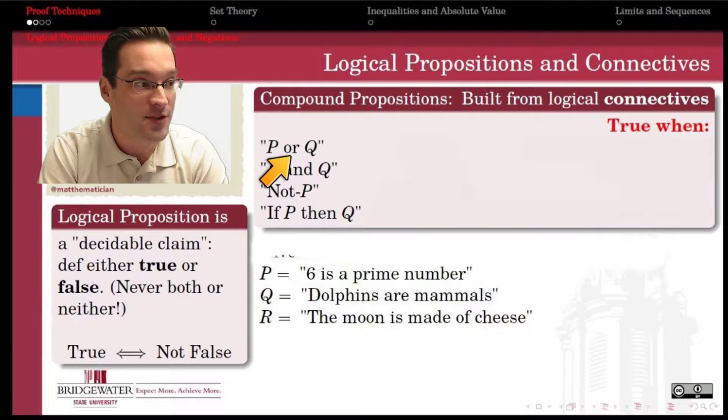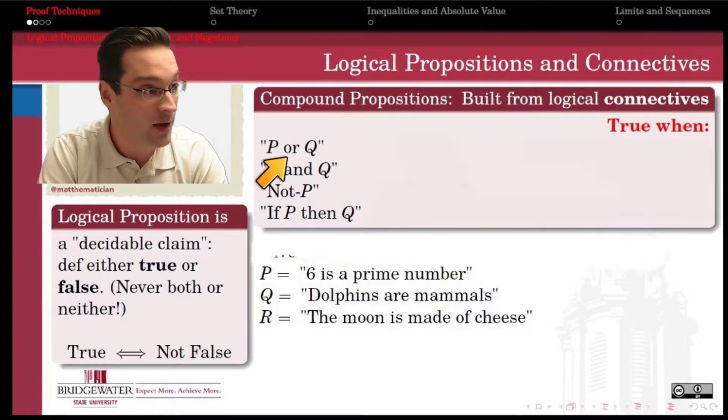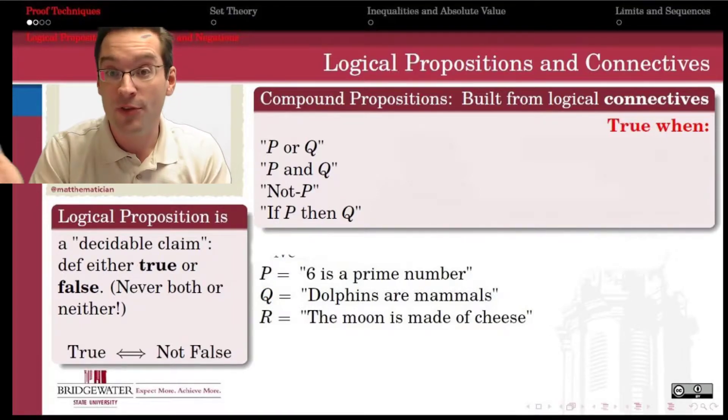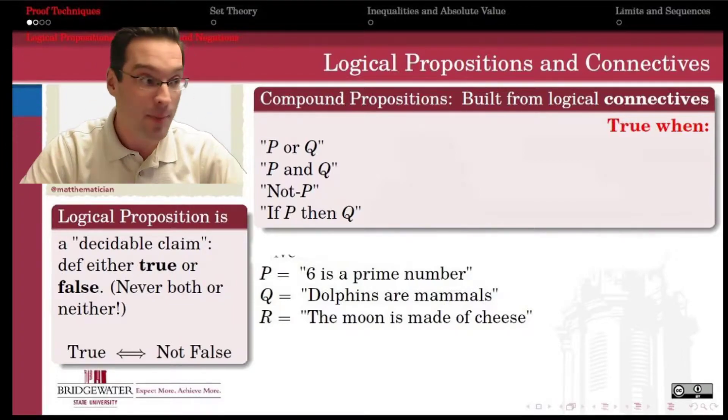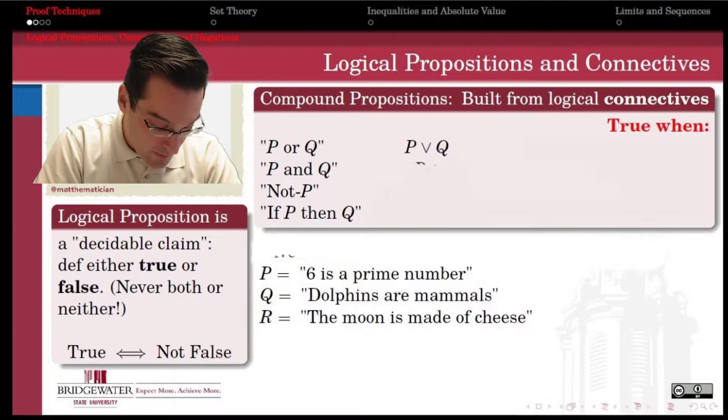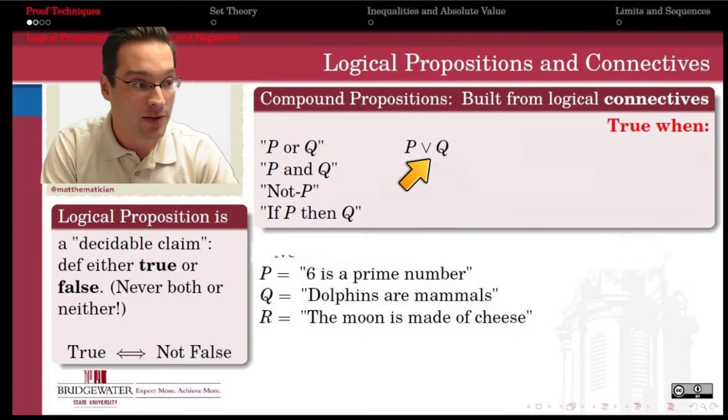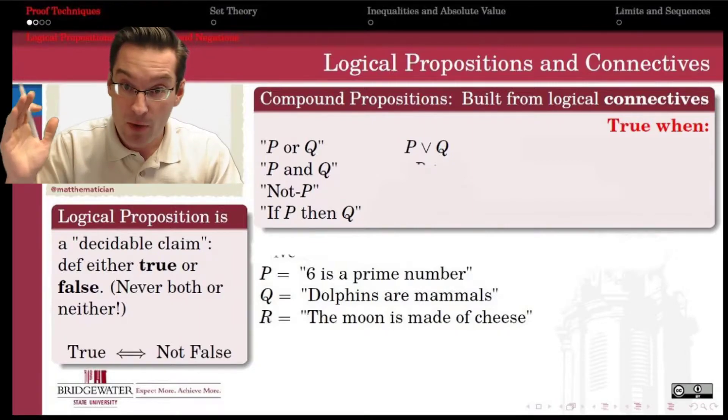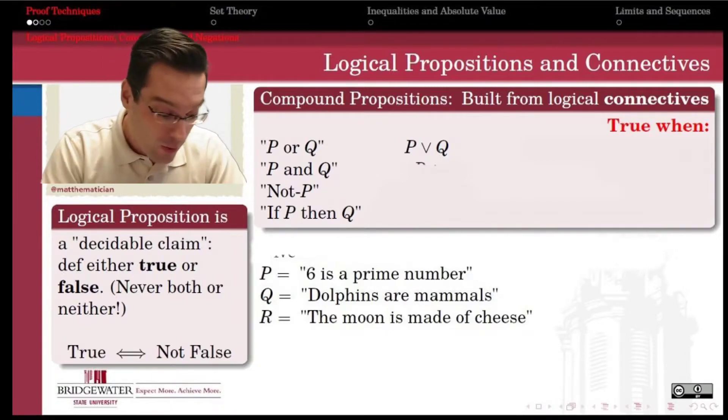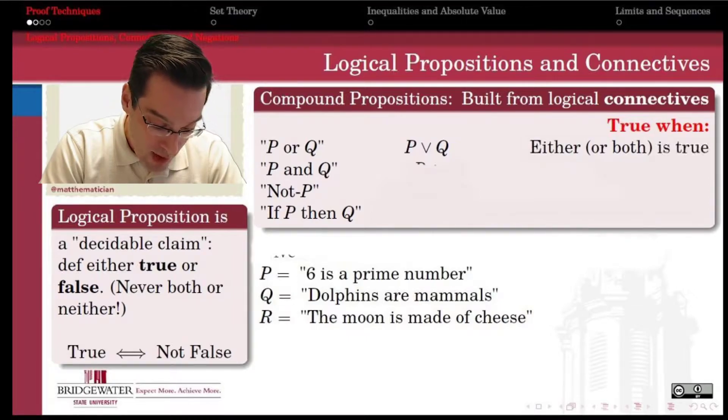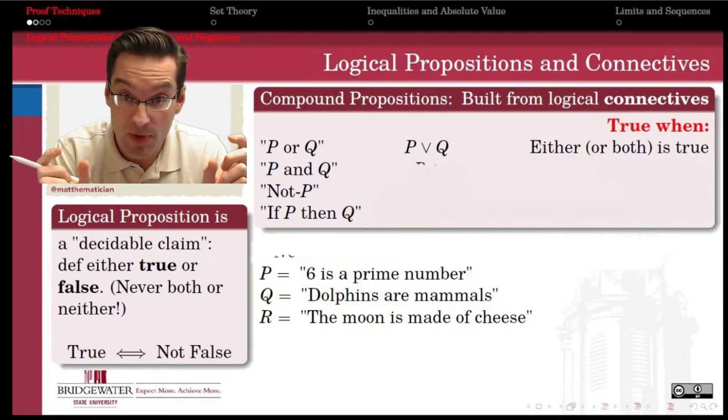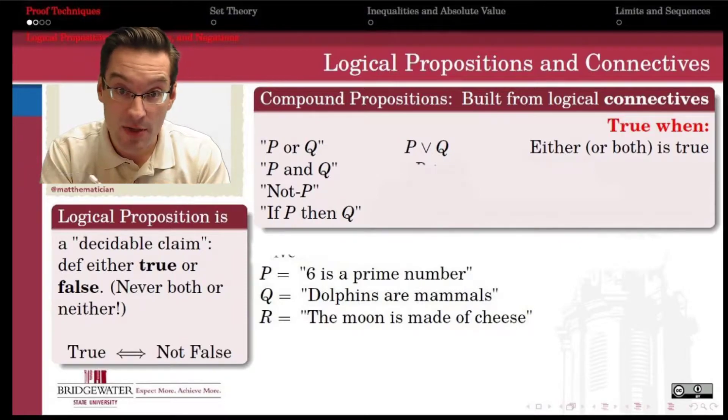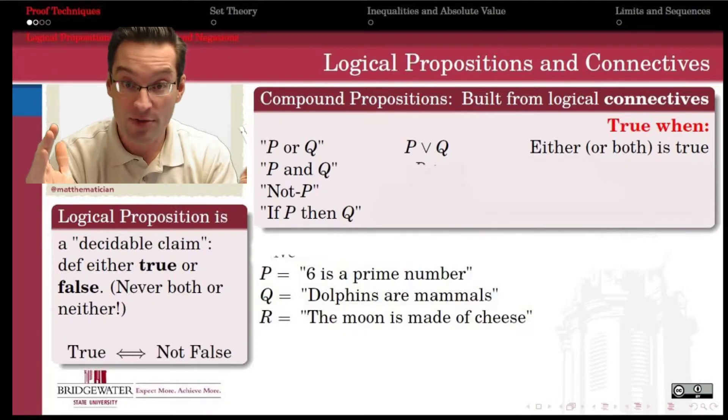The first one is called the logical disjunction, which we usually think of by the simple word OR. So P or Q. We would say in vernacular, the new logical proposition would be 6 is a prime number or dolphins are mammals. That whole long sentence now becomes a single proposition that we call P or Q. In notation, we use this little V-looking symbol to stand in for a logical OR. The logical OR, the disjunction, is a true statement. So that whole sentence, 6 is prime or dolphins are mammals, that whole sentence is true when either one or the other or both of the original statements are themselves true. The disjunction, the logical OR is not fussy. It's not particular. As soon as even one of its component pieces is true, that makes the whole disjunctive statement true.